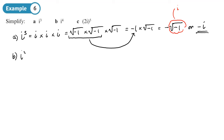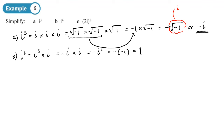Next, i to the 4. An easy way to do this — why not just do i cubed times i? We've just worked out i cubed = −i, so we have −i × i = −i². Since i² = −1, that becomes −(−1) = 1. So i⁴ = 1 — it's interesting that you can do a calculation with imaginary numbers and get a real number solution.